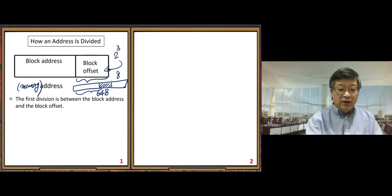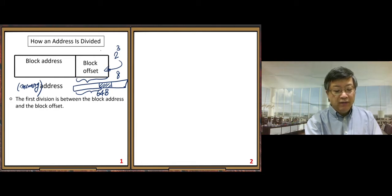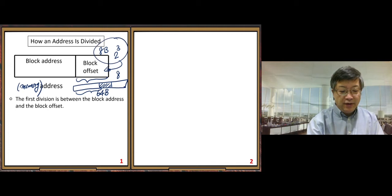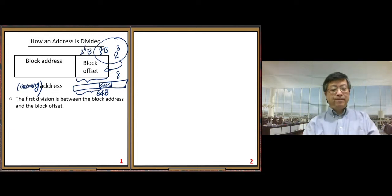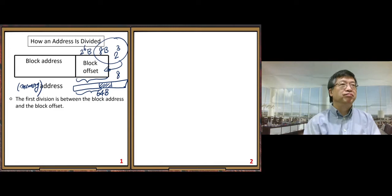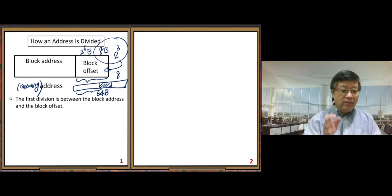The block size is 2^6 bytes (64 bytes), so the block offset uses the last six bits of the memory address. Those last six bits correspond to the block offset part.